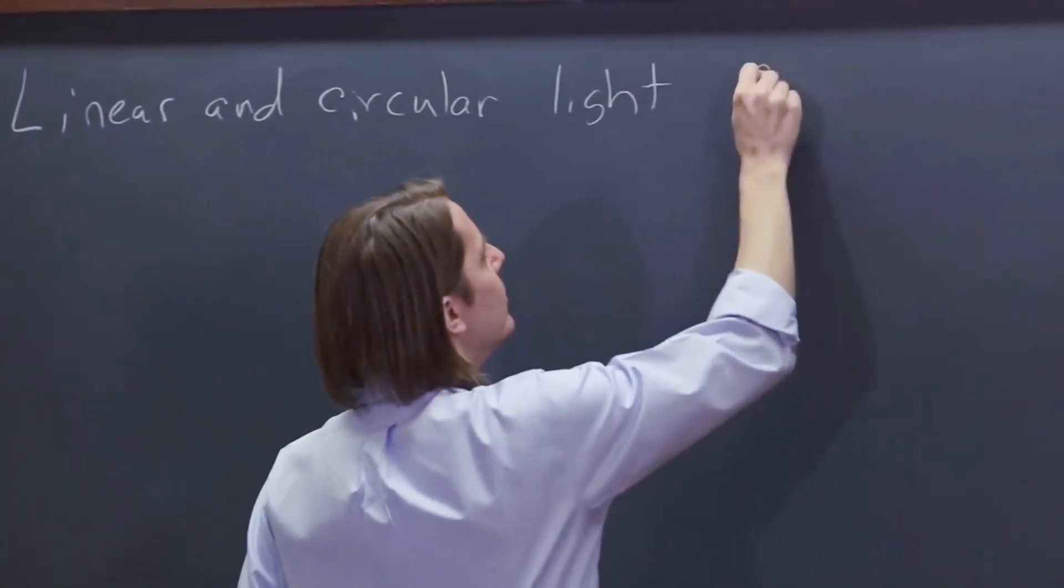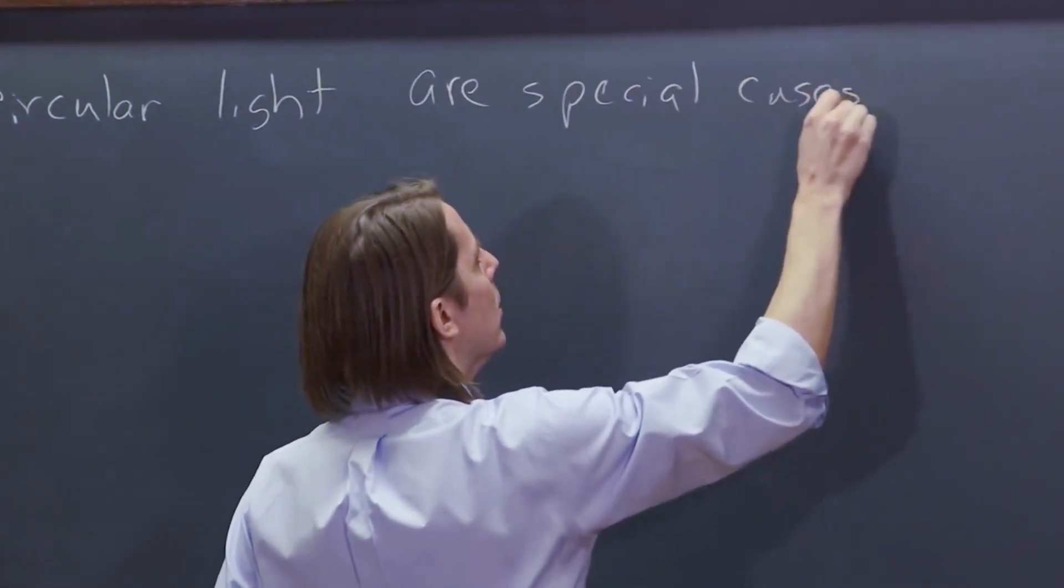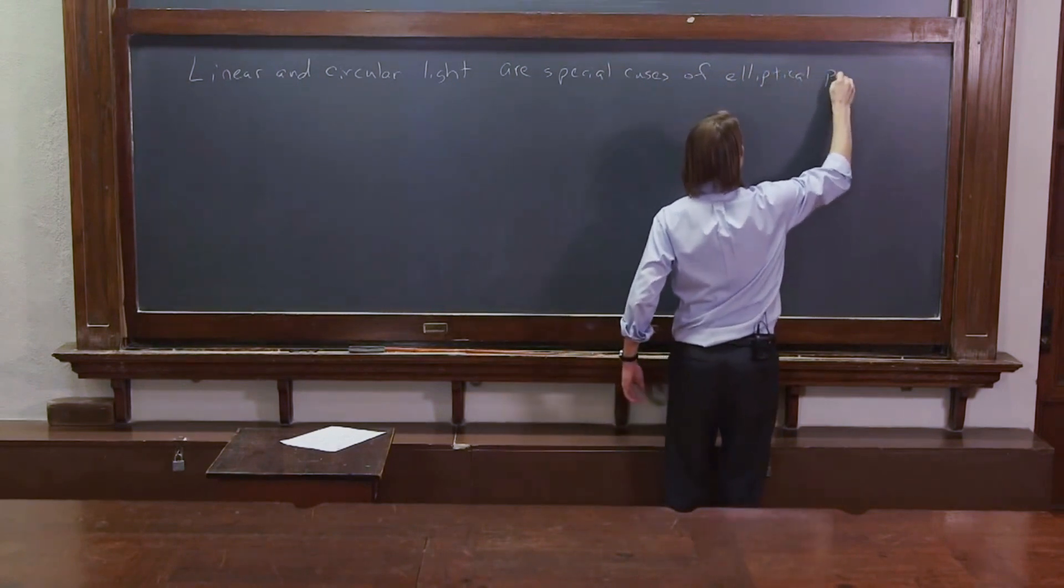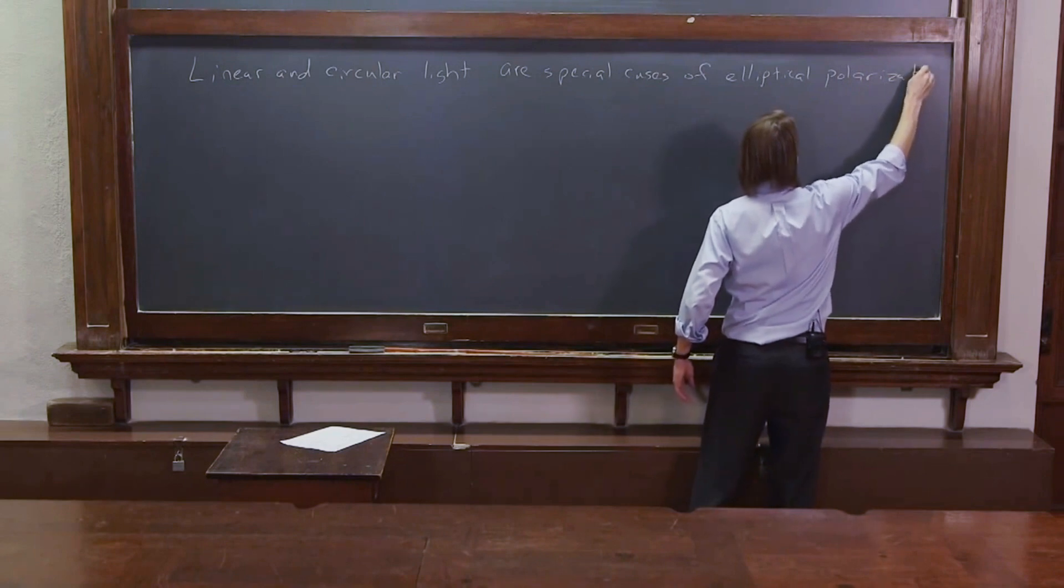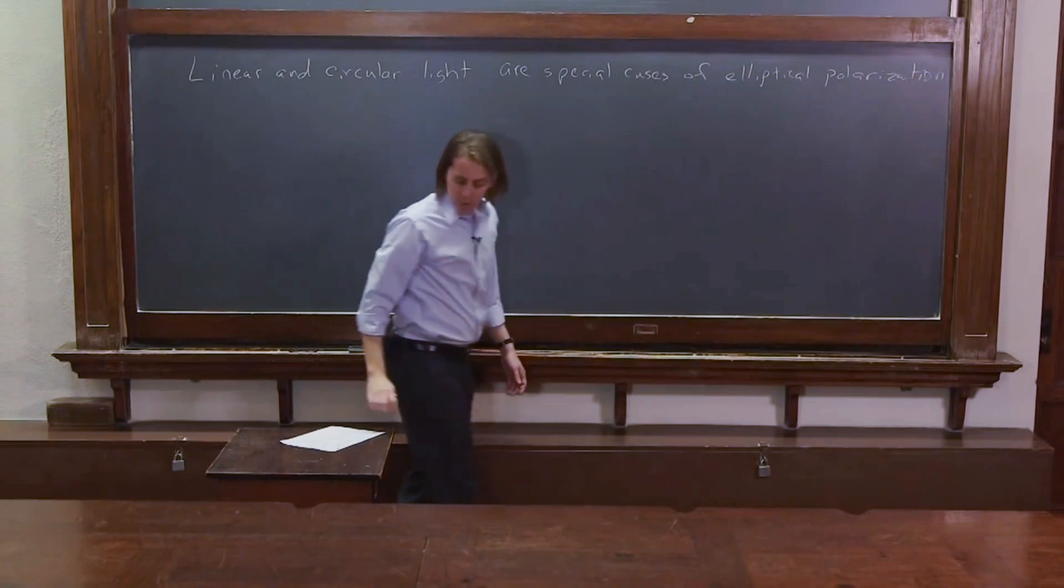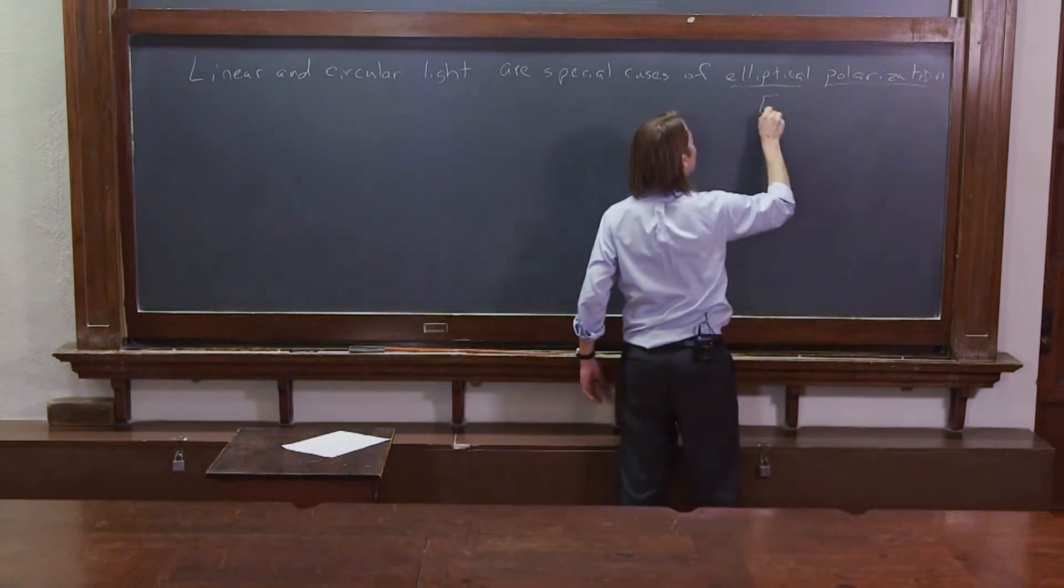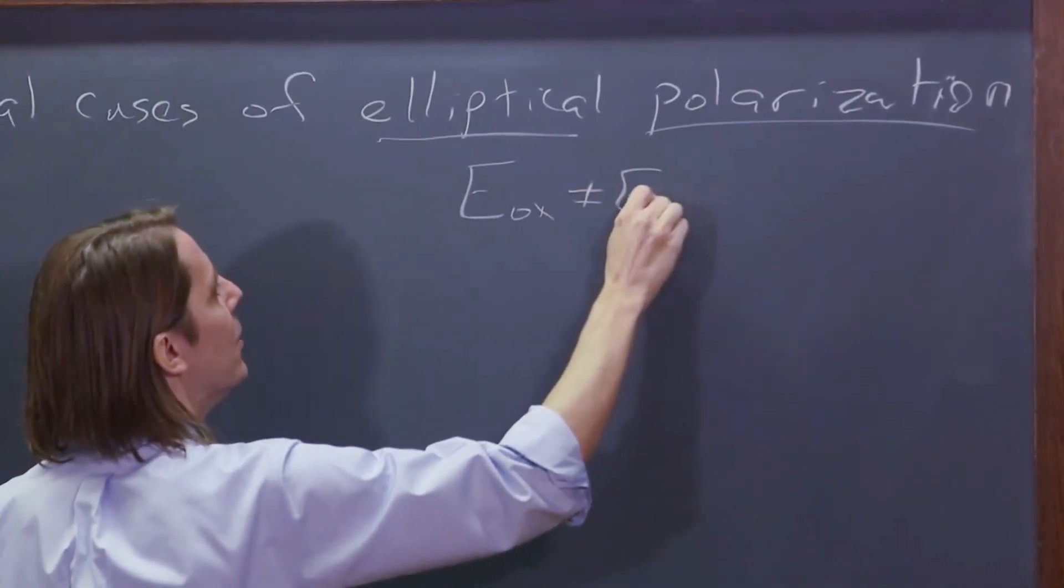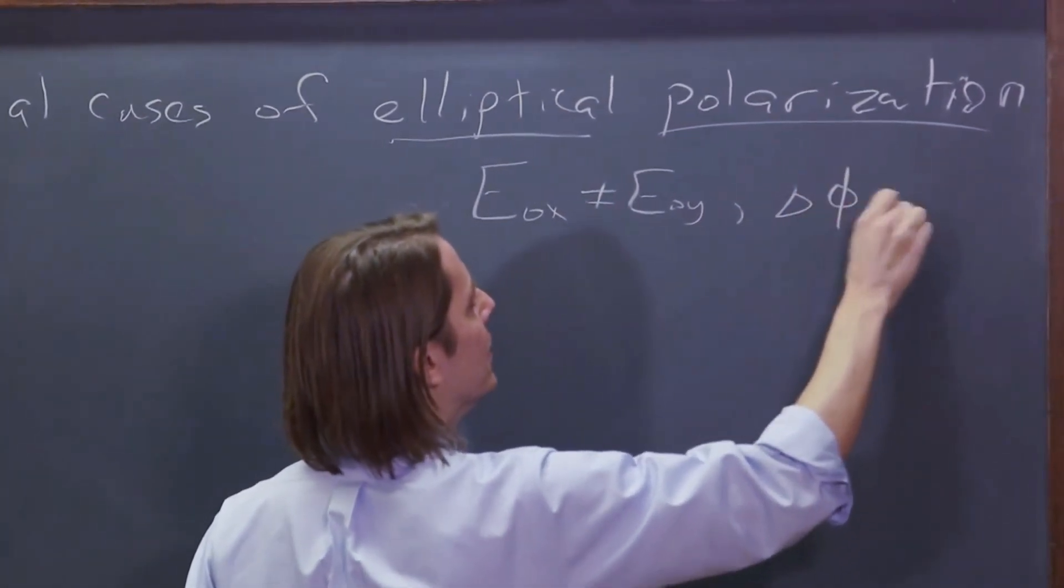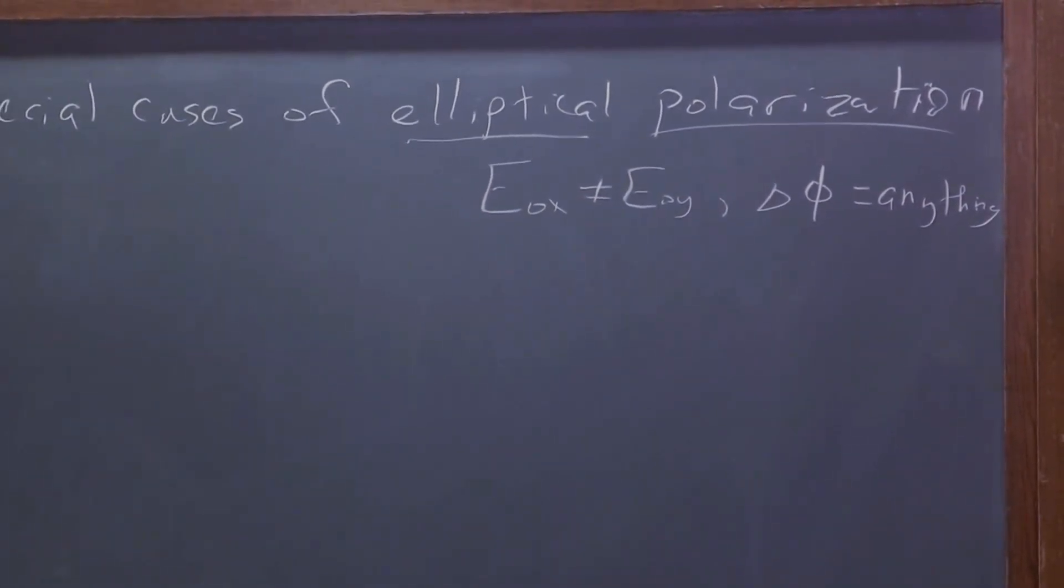Linear and circular light, I'm leaving out the word polarized you know what I mean, are special cases of elliptical polarization. So by elliptical polarization, really mathematically what that means is that E naught X may not equal E naught Y like it does to make those nice circles, and Delta Phi can be anything. It's not always zero, it's not always pi over two.